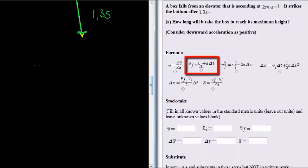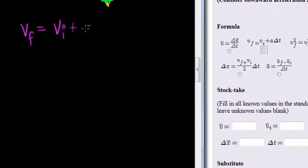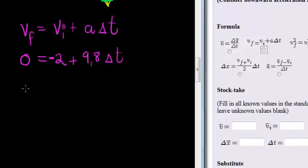With that formula in mind, we have that future velocity is equal to initial velocity plus a delta t. We have future velocity is 0, initial velocity is negative 2 meters per second, plus 9.8 meters per second squared times delta t.